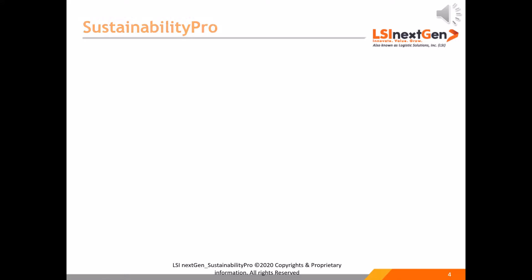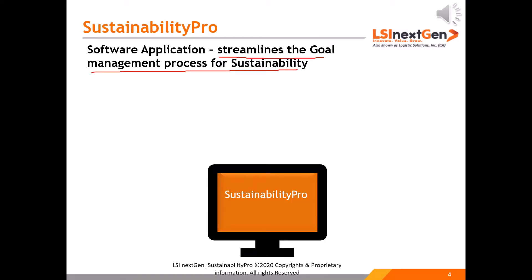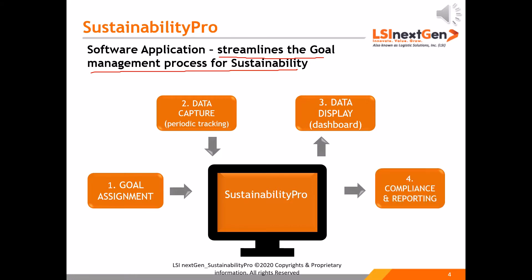Sustainability Pro is a software application that streamlines the goal management process for sustainability. The platform allows corporates to assign goals, capture data, and track them periodically. It displays the data in a meaningful way through dashboards, ensuring compliance readiness and audit reporting.